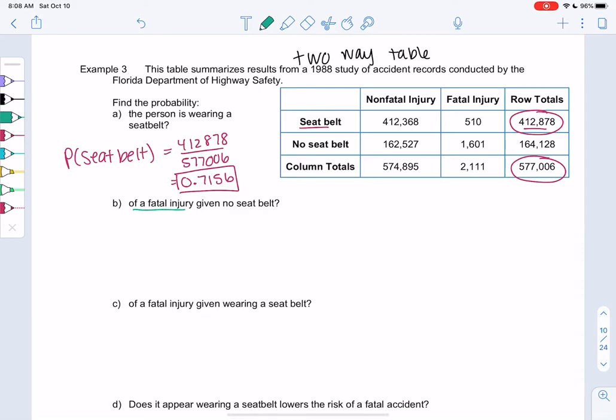Let's do the probability of a fatal injury given no seatbelt. P of fatal, a big line for given, no seatbelt. That means we're basically saying what's the probability of fatal if you're not wearing a seatbelt. That's what a given is, it's setting a condition.